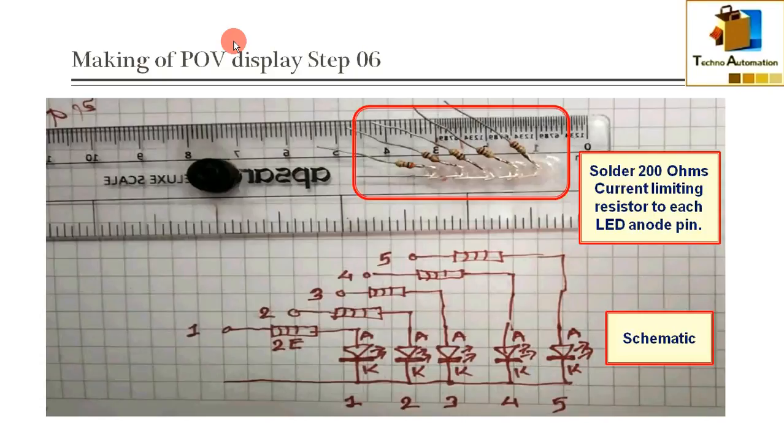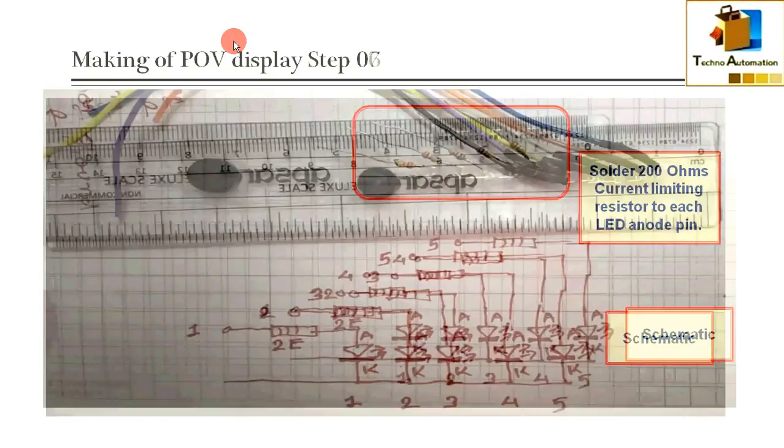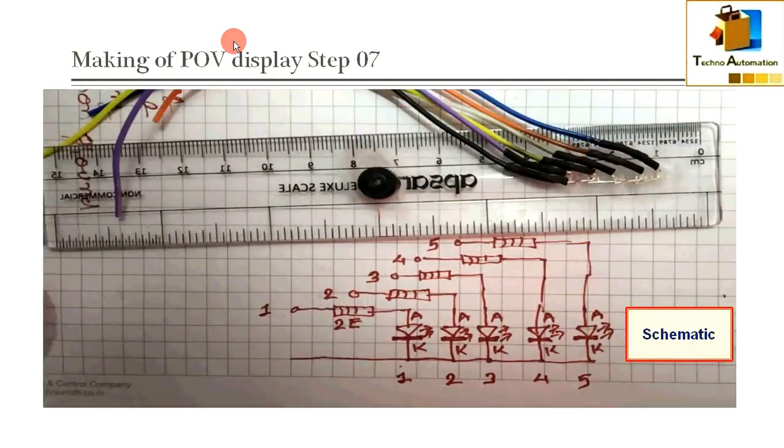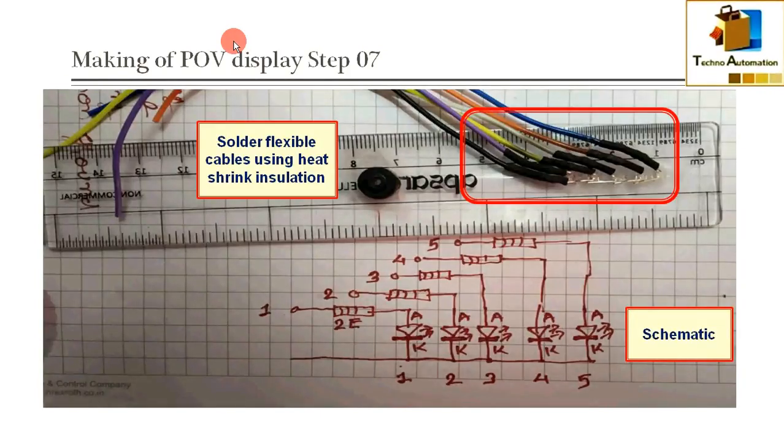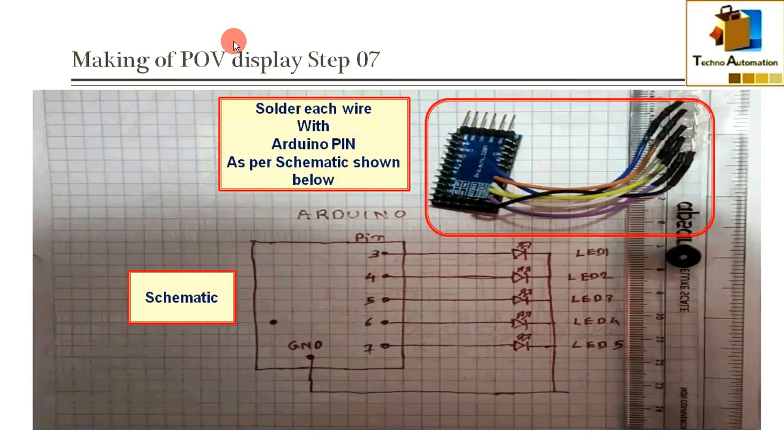After that, I have soldered flexible wire to each second terminal of resistors and secured all the connections using heat shrink. After that, I have soldered all flexible wires to Arduino pins following the schematic. The first LED is connected with pin number 3, second is connected with 4, third is connected with 5, fourth one with pin number 6, and fifth one is connected with pin number 7.